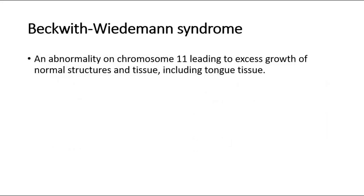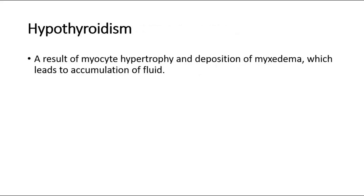In Beckwith-Wiedemann syndrome, there is an abnormality on chromosome 11, leading to excess growth of normal structures and tissue, including tongue tissue, causing macroglossia.